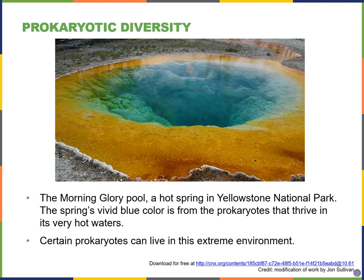As an example of an extreme environment, we have this hot spring found in Yellowstone National Park. The temperature of this hot spring can go up to about 159 to 160 degrees Fahrenheit, which is about 70 degrees Celsius. Compare that to our body temperature of about 37 degrees Celsius — this is very hot. And even at this temperature, certain prokaryotes, these archaea, can still survive. In fact, they prefer these hot environments.